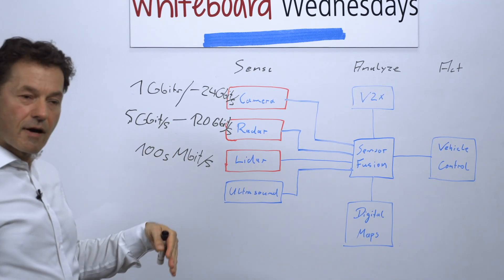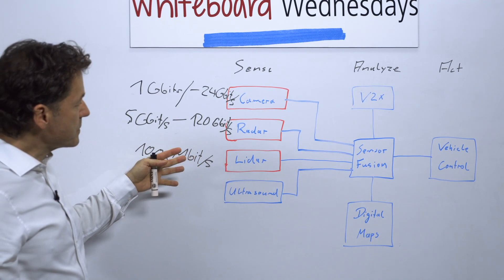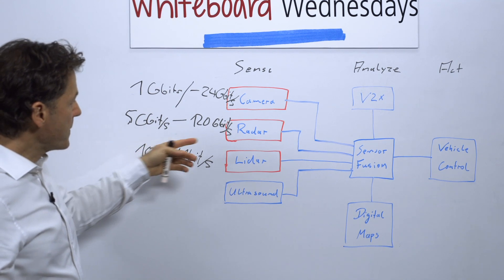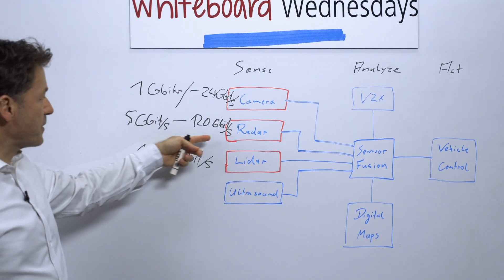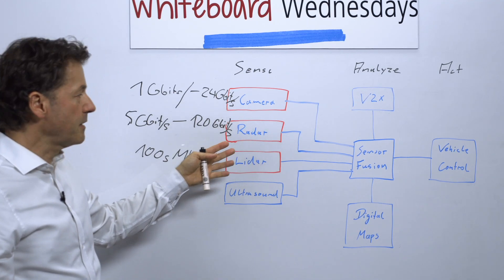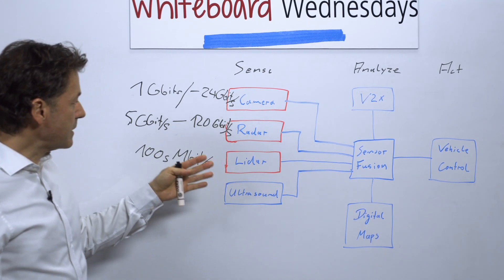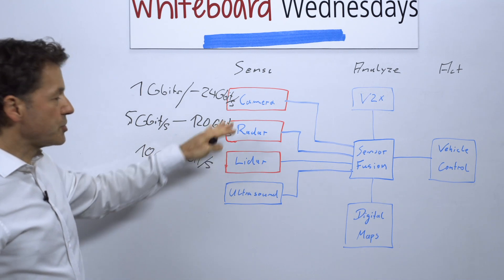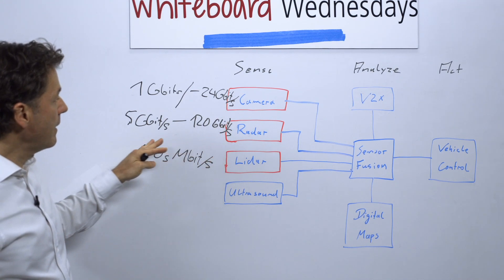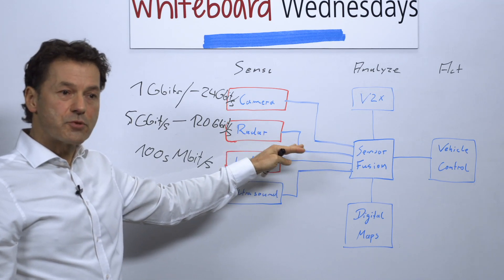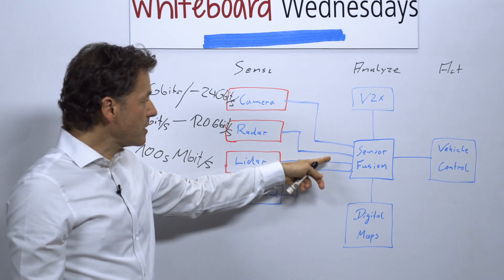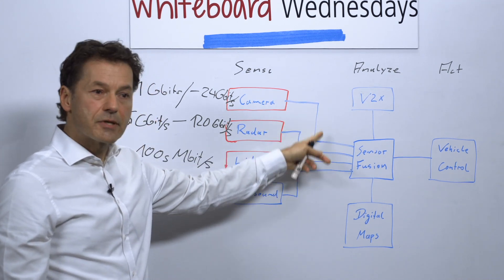Coming back to what I talked about last week with the raw sensor data fusion approach: the high-speed links needed for high-resolution radar sensors don't exist today. Therefore, it's advantageous to have smart sensors doing sensor pre-processing and transmitting object-level data, which is significantly lower in data rate and relaxes requirements on high-speed links.